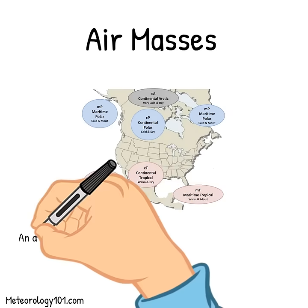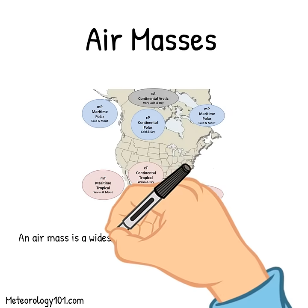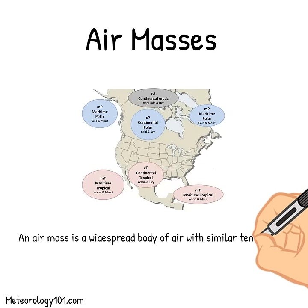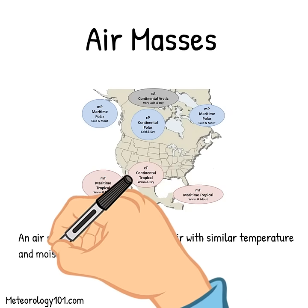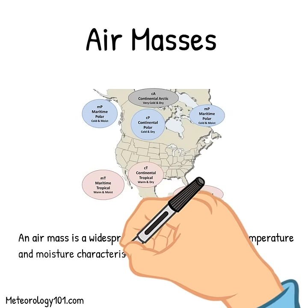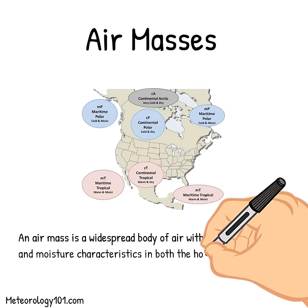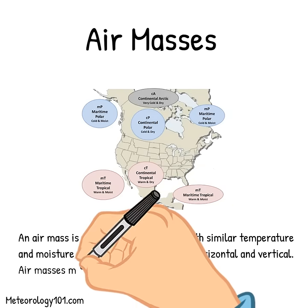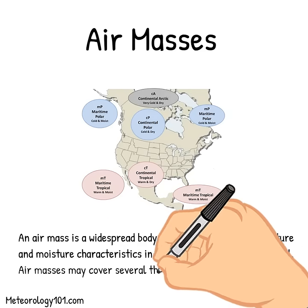The definition of an air mass: a widespread body of air with similar temperature and moisture characteristics in both the horizontal and vertical. Air masses may cover several thousand square miles.